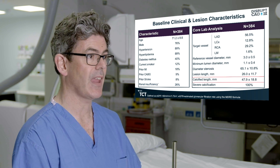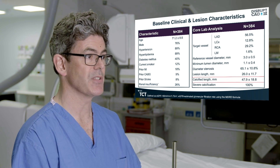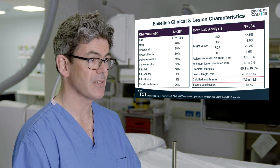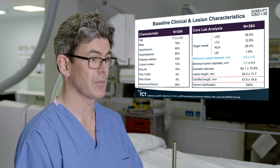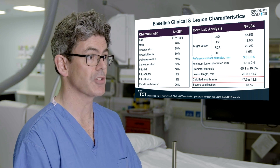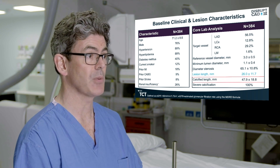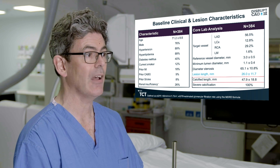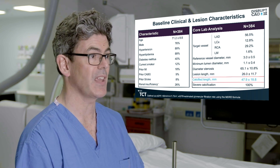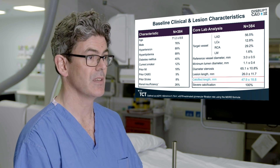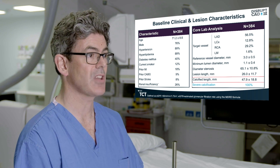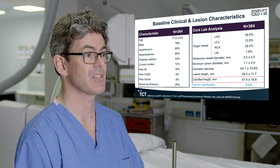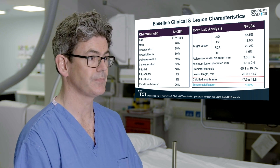Baseline angiographic characteristics include a reference vessel diameter average of 3 mm, lesion length average of 26 mm, and a calcified segment length of 48 mm. 100% of these target lesions were classified as severe calcification.